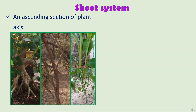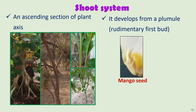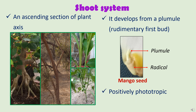The shoot system is an ascending section of a plant that grows upward above the ground. It develops from a plumule, which is the rudimentary first bud of the embryo seed. If we open a mango seed, we can easily see the embryo of a plant, because mango seeds are quite large. The embryo has two parts: the plumule and the radicle. The plumule becomes the future shoot system, whereas the radicle becomes the future root system. Shoots are positively phototropic — they grow towards sunlight — and negatively geotropic, meaning they grow against gravitational force.